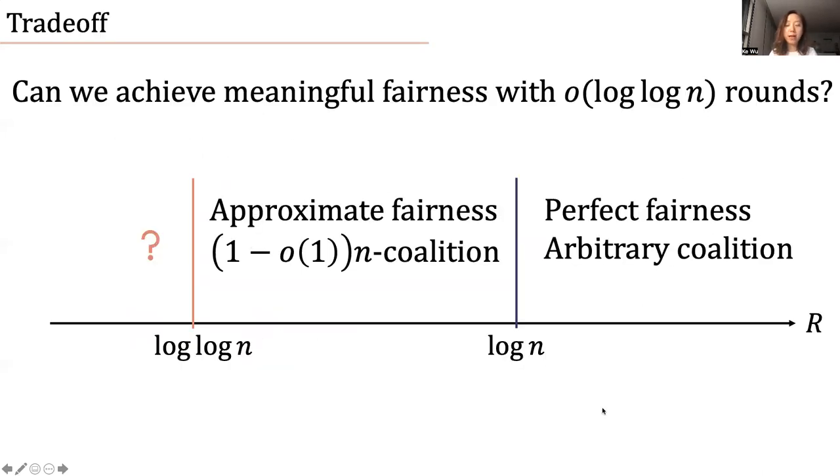So previous work have shown that if we're willing to use log n rounds, we can achieve perfect game theoretic fairness against arbitrary-sized coalition. And if we're willing to sacrifice a little bit fairness, but just requiring approximate fairness, which says a coalition cannot increase their utility by too much, then we can tolerate a one minus small epsilon n-sized coalition.